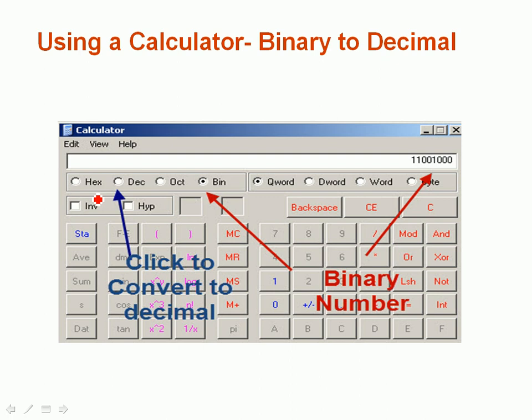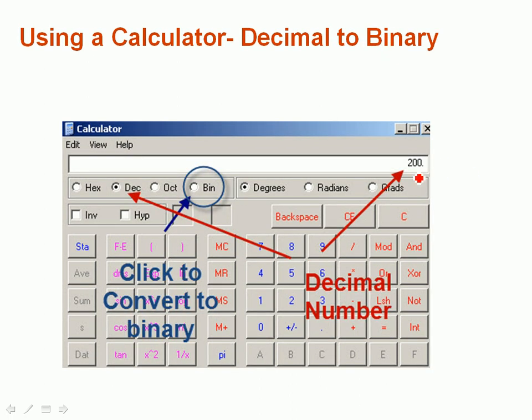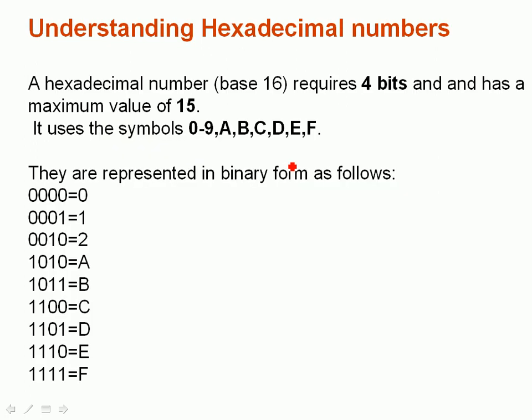Now, once you're used to doing it manually, then it's obviously much easier if you use a calculator. You can find one on Windows, and here we just type in the binary numbers. You can see we're in binary here, and there's a binary number. And then you just click on the decimal to convert it to decimal. If you want to go to hexadecimal, you go here. And this is what this number translates to in decimal.